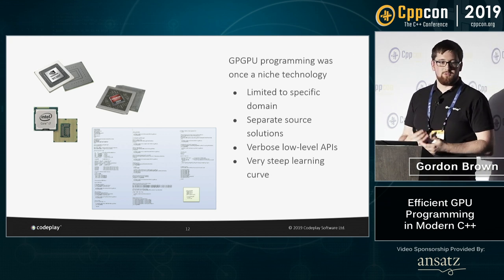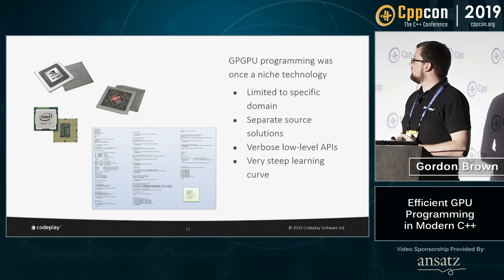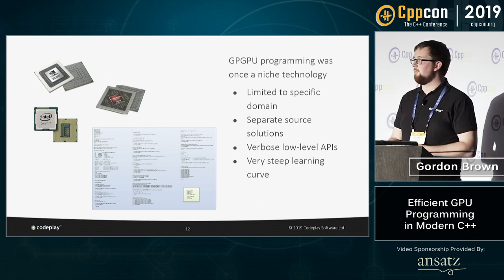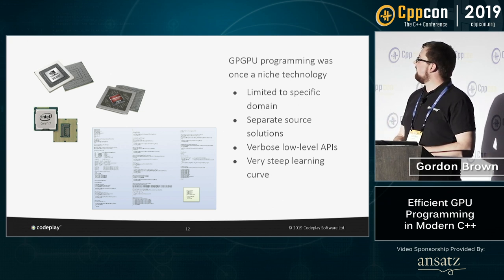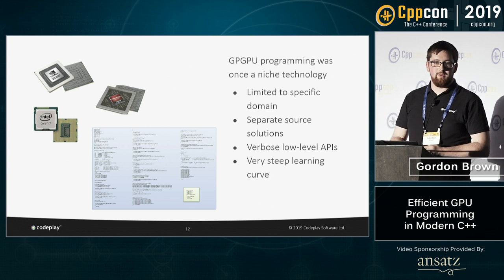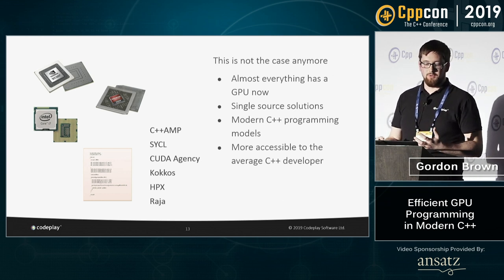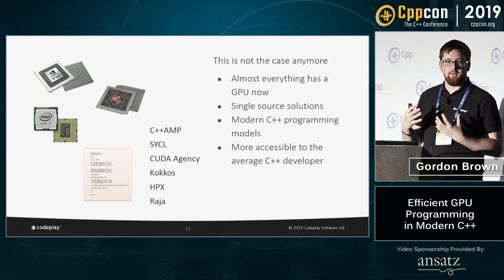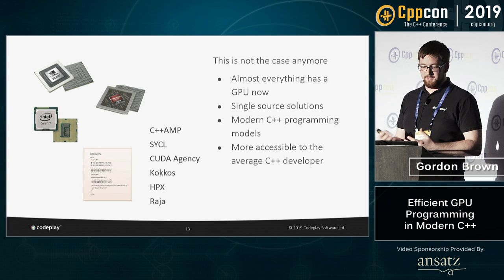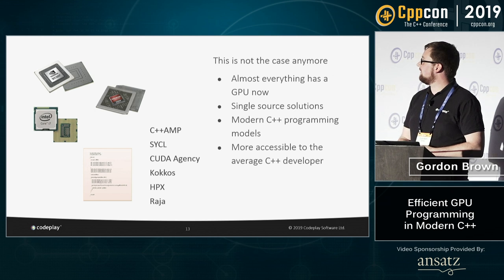In the past, GPGPU — general purpose GPU programming — was a niche technology with a steep learning curve, verbose programming models, and code written in a separate language. But that's no longer the case. GPGPU has become much more accessible to all C++ developers because most programming models are now single source: both host and device code are in the same C++ source file.